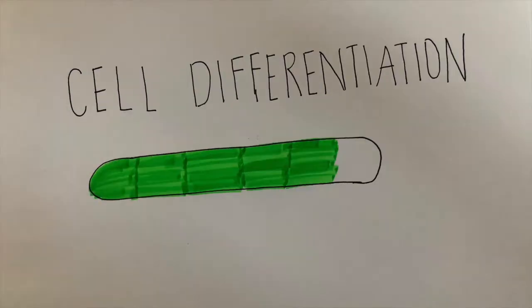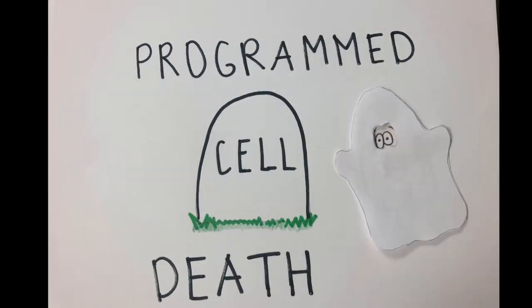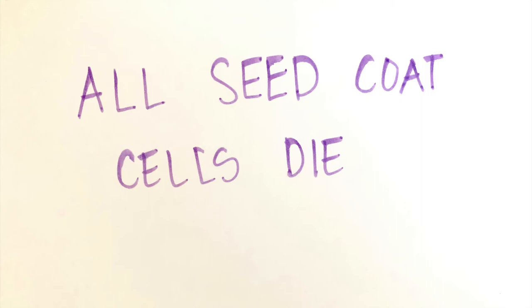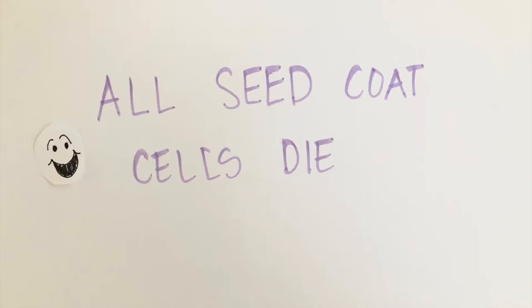Now that all the cells are differentiated, it does not mean that the seed coat is complete. We still have to talk about one more step — programmed cell death. All seed coat cells die, but it's not as tragic as it sounds. Death is necessary for the seed coat to reach its final form. Cells are programmed to die in the final stages of seed coat development, and cell layers die at different times and in a specific sequence. The first to die are the two outer layers of the inner integument. Programmed cell death in the seed coat is still an area of active research, and not much is known about it.